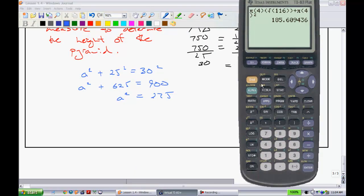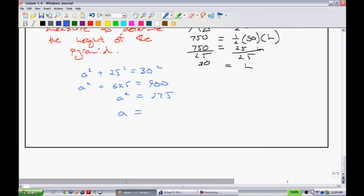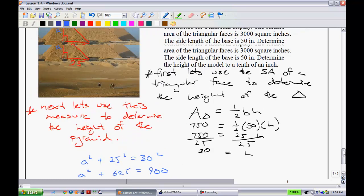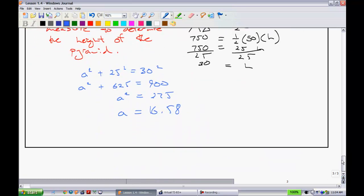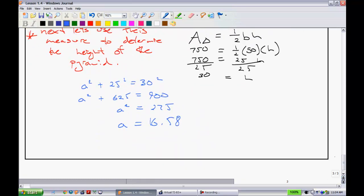You would get A. A is equal to the square root of 275. So, we got 16.58. And I believe they asked you to round to the nearest tenth of an inch. So, we would say it is equal to 16.6 inches, like so.